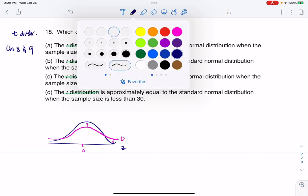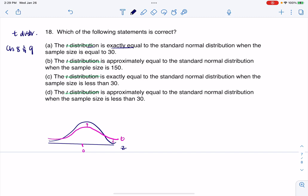All right, so let's see what we got here. So the t-distribution is exactly equal to the standard normal when the sample size is 30. Any time I see this phrase exactly equal, that would make me nervous. And I do want to reiterate, it's not exactly equal.